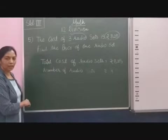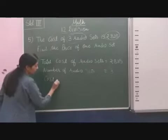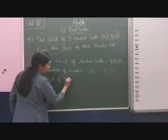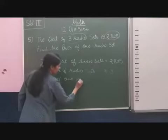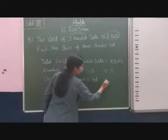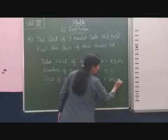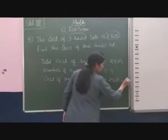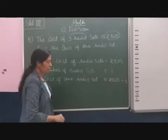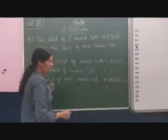The cost of 1 radio set is equal to Rs. 825 divided by 3. So, you can do your long division method.